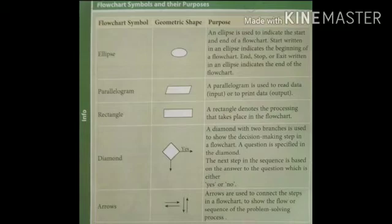And the last one are arrows. Arrows are used to connect the various steps in a flowchart and also show the flow or sequence of the problem-solving process. These are the five major flowchart symbols which are used to draw a flowchart.